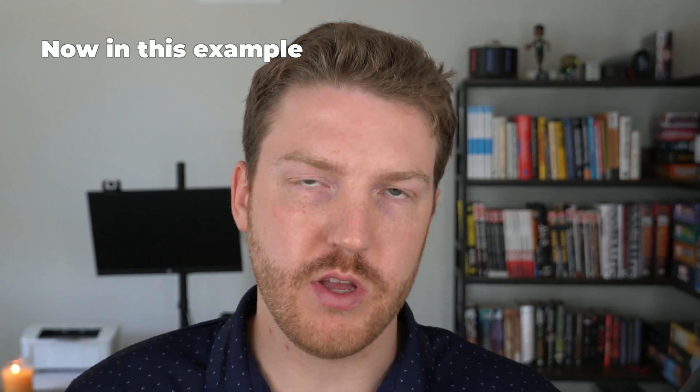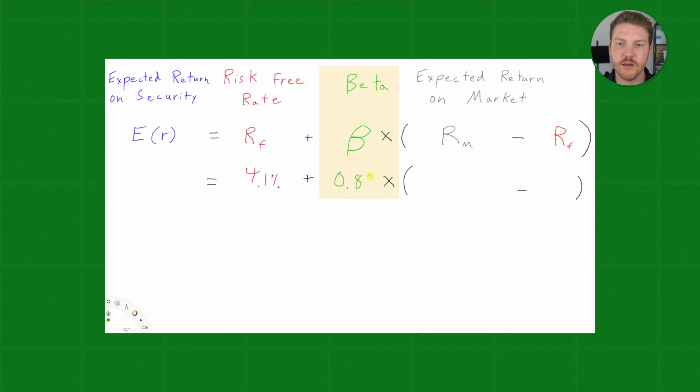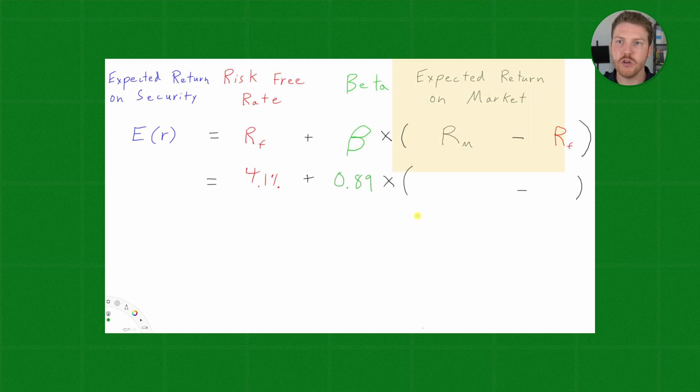Now, in this example, our security in question will be Microsoft, which I can look up and find that it has a beta of 0.89. So, if the market goes up about 10%, then Microsoft should go up about 8.9%, whereas if the market goes down 10%, Microsoft should fall by about 8.9%. Given that the security in question is Microsoft, let's pencil in that beta of 0.89, and then let's jump over to our next variable in the equation.